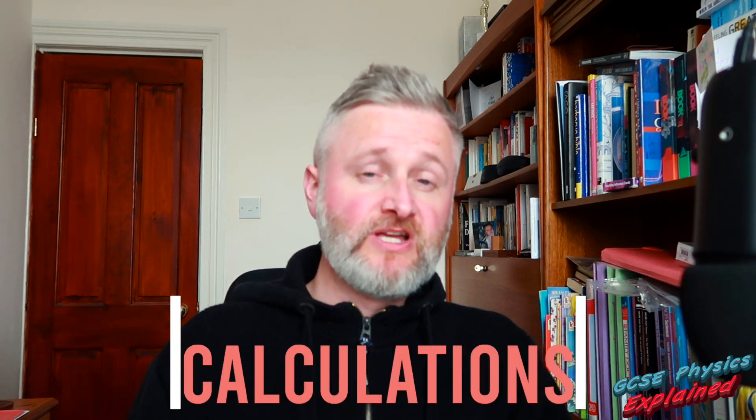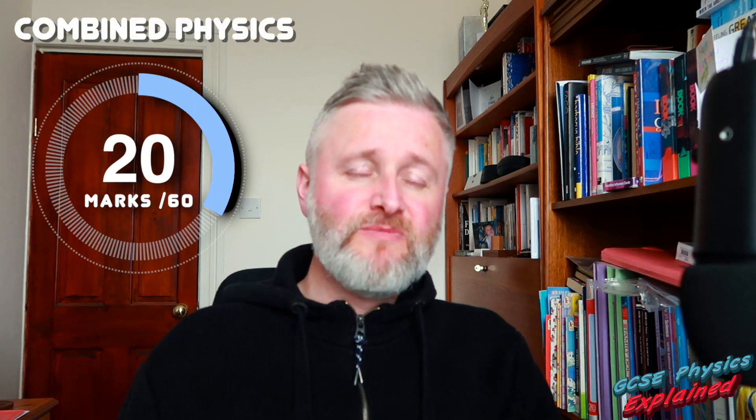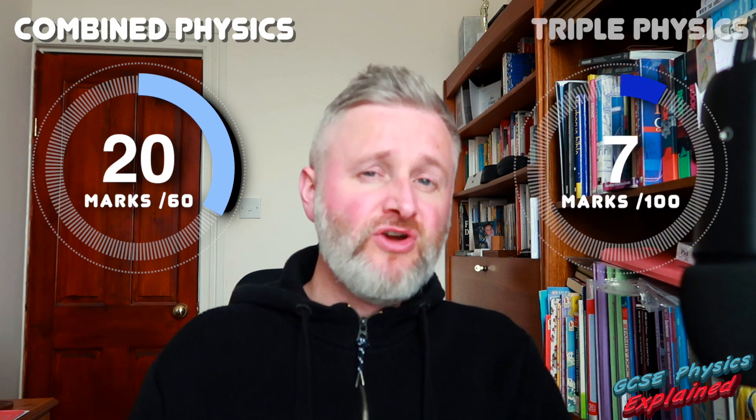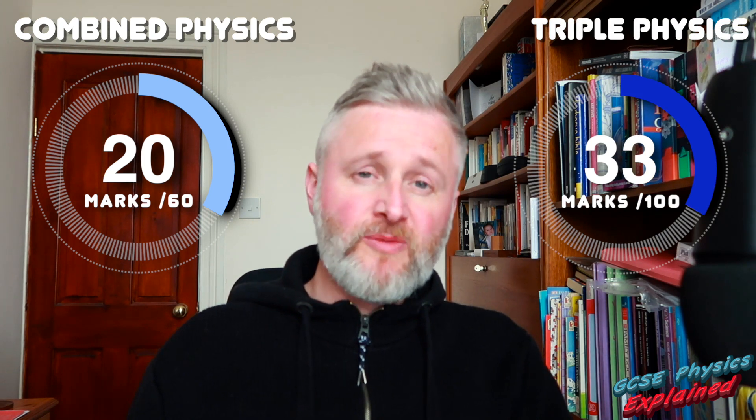Which means roughly 20 marks out of 60 marks for the combined papers will be calculations, and roughly 33 marks out of 100 will be on the triple paper. Now to put that into perspective, if you look at the grade boundaries which I'm showing you here on the physics exams.